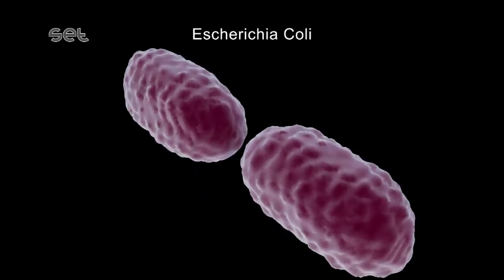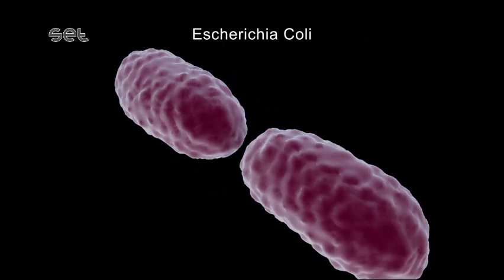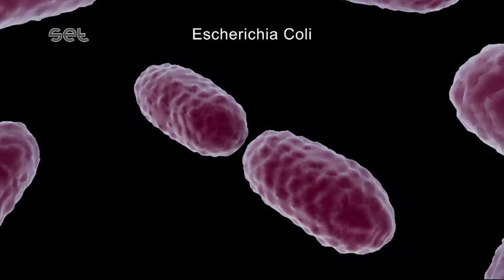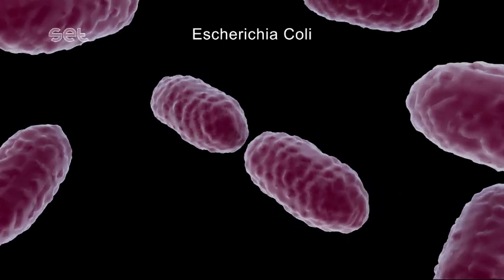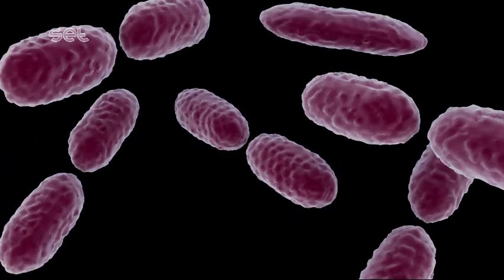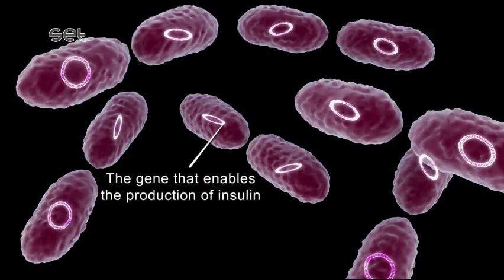The bacterium multiplies by binary fission repeatedly. All of the bacteria produced carry the gene that is responsible for the production of insulin.